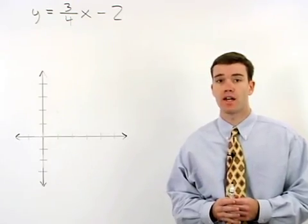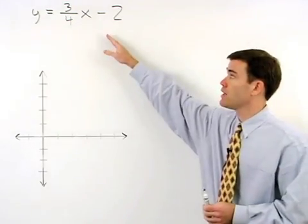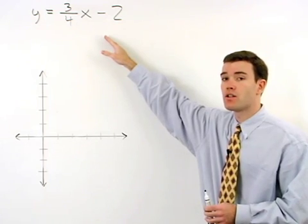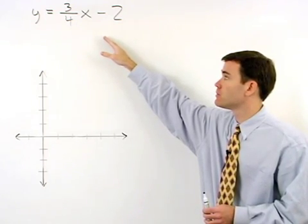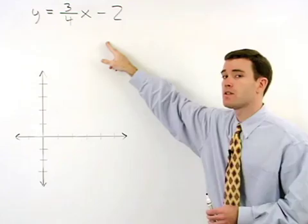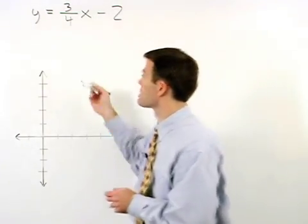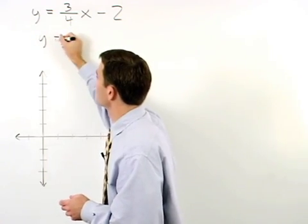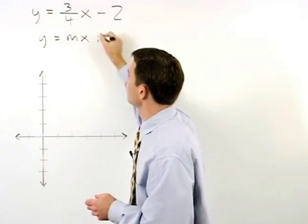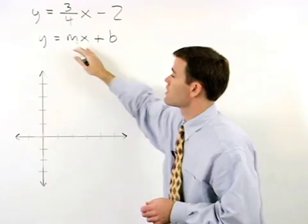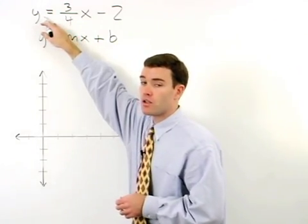So let's graph the line that has the equation y equals 3/4x minus 2. We know that this line is in slope-intercept or y equals mx plus b form because y is by itself on one side of the equation.